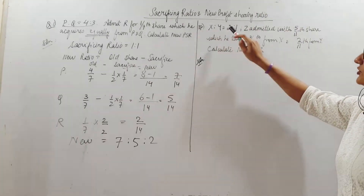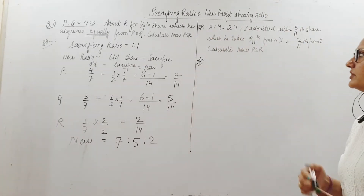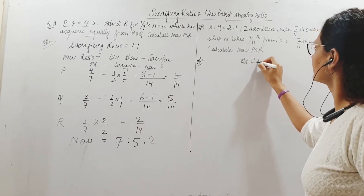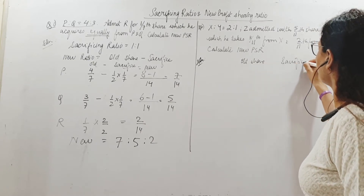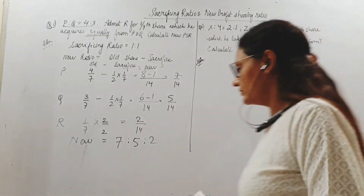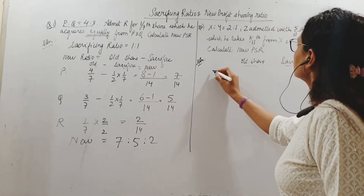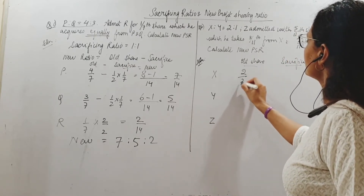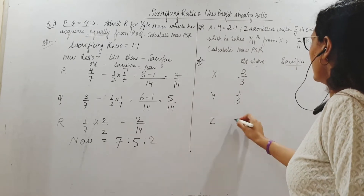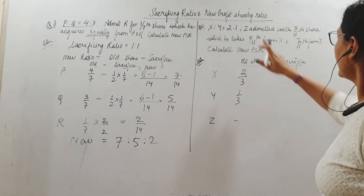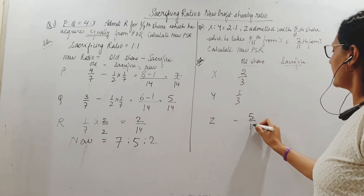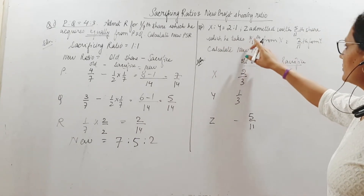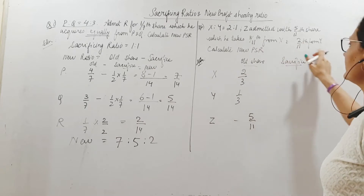Second question: X and Y are partners sharing in the ratio 2 is to 1. We need to find the new profit sharing ratio again. Old shares are: X has 2 by 3 and Y has 1 by 3. Z is the new partner and his new share is 5 by 7. He takes 3 by 11 from X and 2 by 11 from Y.